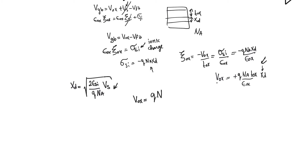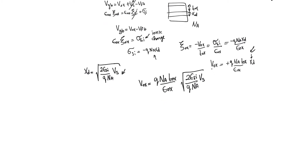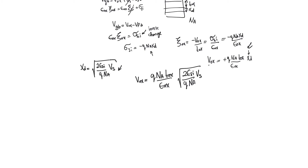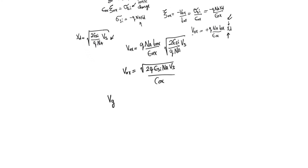When we plug in the expression for XD, we get a non-linear relationship between VS and V_oxide. This relationship shows that VS is smaller than V_oxide, which we could have already guessed. We can simplify this so that V_oxide equals square root of 2·Q·epsilon_silicon·Na·V_surface, all divided by C_oxide.